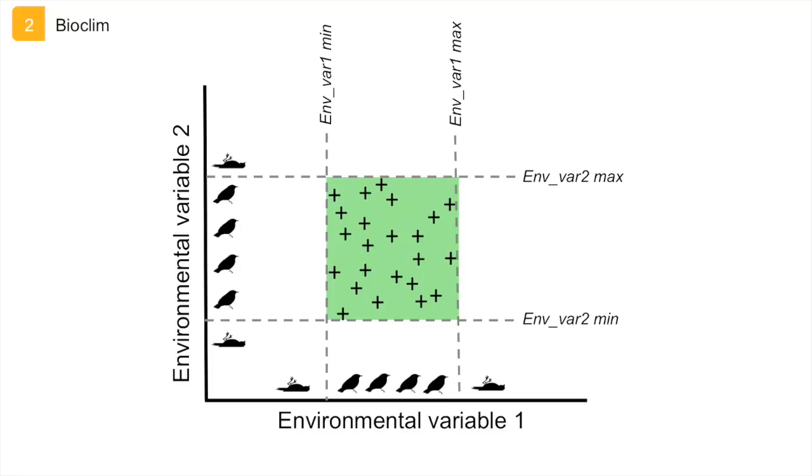To avoid the over-predictive effect of outliers, the resulting envelope can be reduced to user-specified percentiles, such as the inner 95%. If you include more than two environmental variables in the model, this would result in a multi-dimensional bounding box.